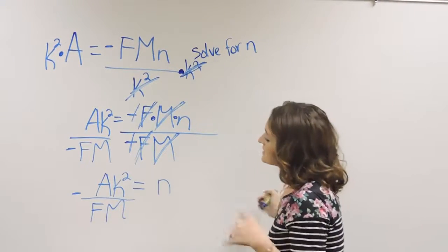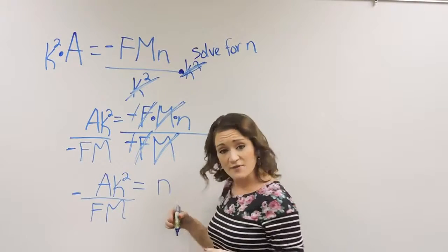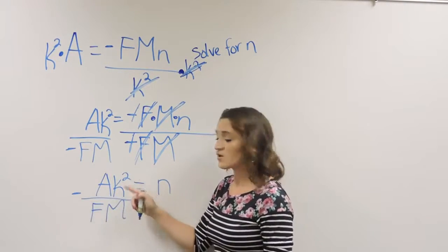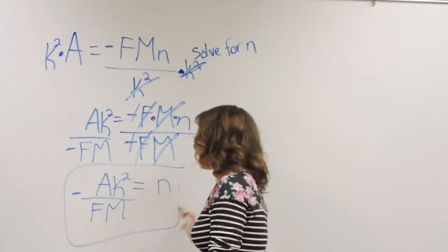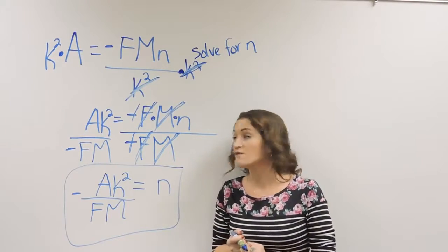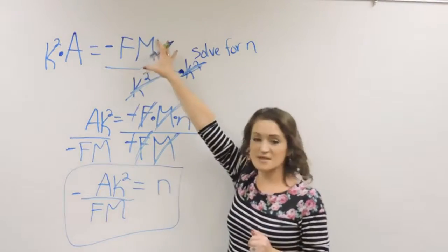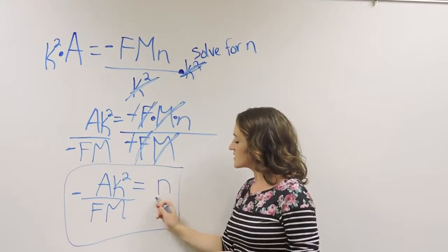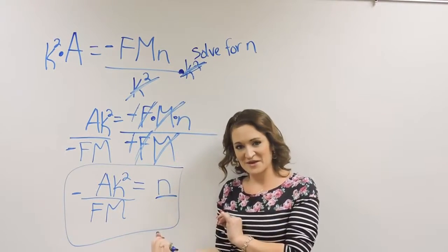And now when I step back and I look at this, I have it solved for n. N equals negative ak squared over fm. And this would be my final solution here. This would be the n equation that I'm looking for because we wanted to take this original equation over here, rearrange it around to where it's solved just for the n there.